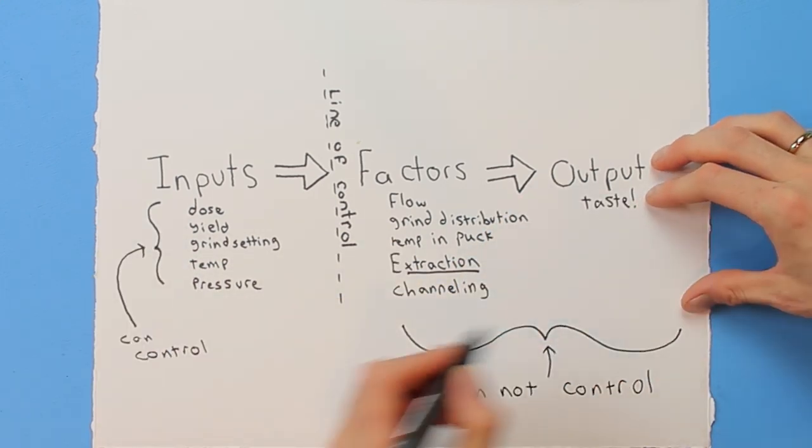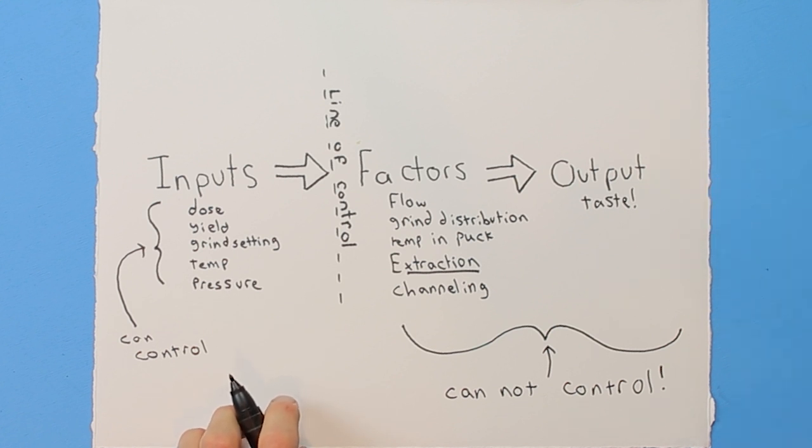I'm going to talk about espresso using the terms inputs and factors so I can describe how what you change and the effect that change has are not always correlated one-to-one. Thinking of them as inputs you control and factors you can't control keeps my thoughts organized.